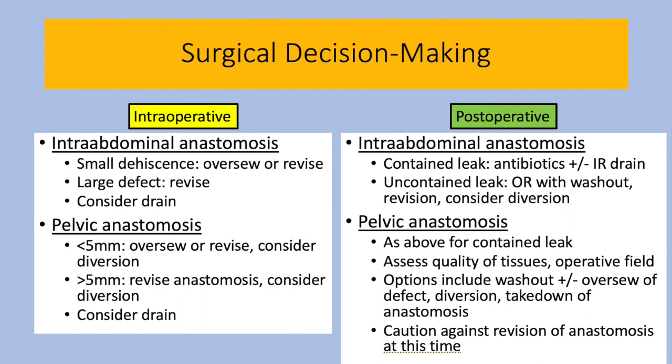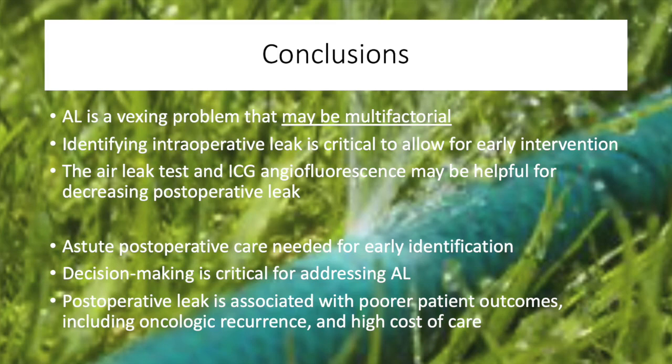I would highly caution against the revision of an anastomotic leak at that time. In summary, anastomotic leak is a vexing problem that may be multifactorial in nature. Identifying intraoperative leak may allow for prevention of a postoperative leak. The air leak test and the use of angiofluorescence can provide qualitative intraoperative feedback. Astute postoperative care is essential for early detection of leak, and decision-making is critical for making the next best steps in management. What is clear is that anastomotic leak is associated with poor patient outcomes, including oncologic recurrence and astronomically high costs of care.